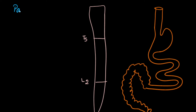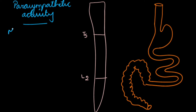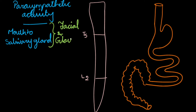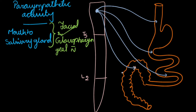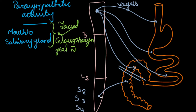Now let's see the parasympathetic activity. The nerve supply from the mouth to the salivary glands — both preganglionic and postganglionic fibers — is through the facial and glossopharyngeal nerves. For the whole GI tract, preganglionic fibers arise from the vagus nerve and supply the stomach, duodenum, small intestine, and up to the upper part of the large intestine. The lower part of the GIT is supplied by S2, S3, and S4 segments — that is, pelvic nerves arising from these segments — and here also only preganglionic fibers are present.